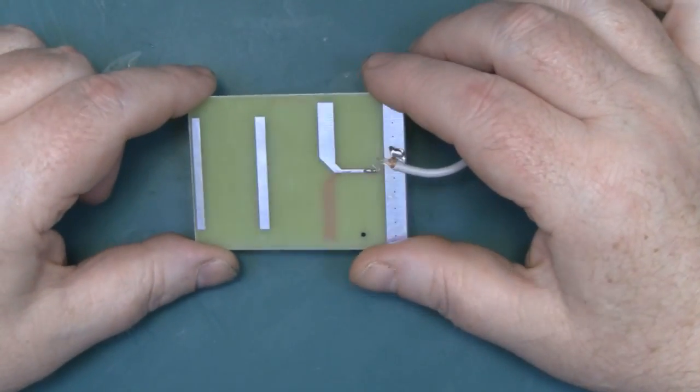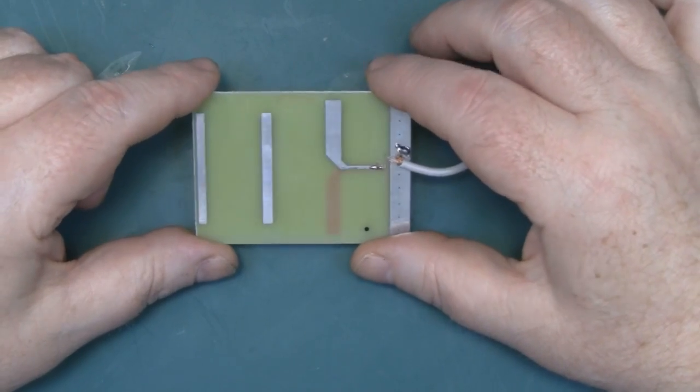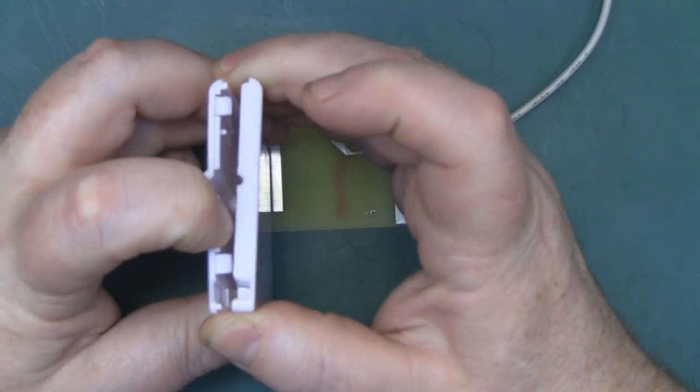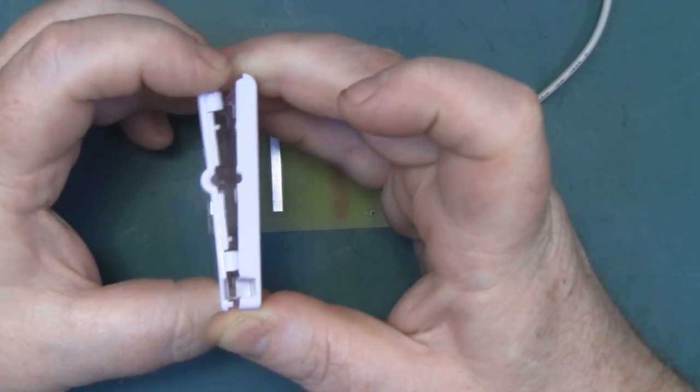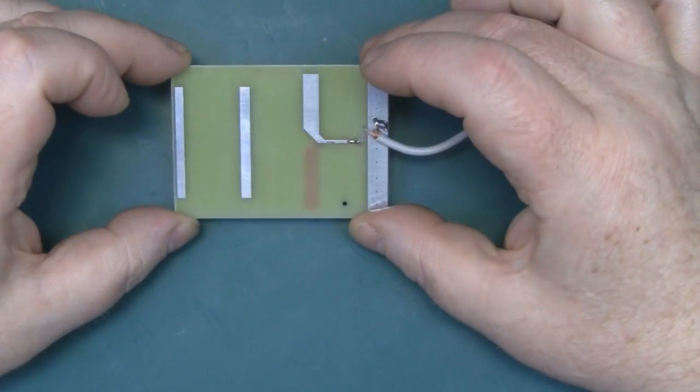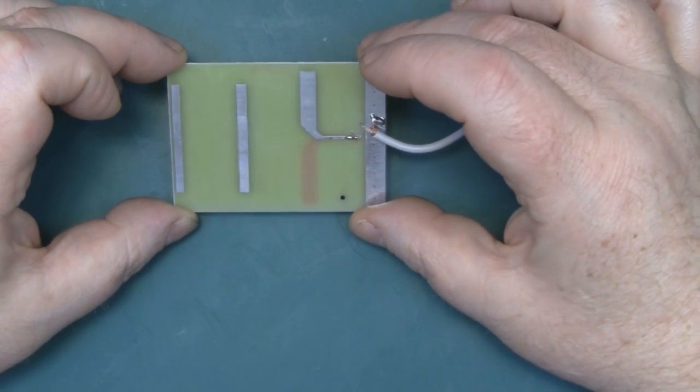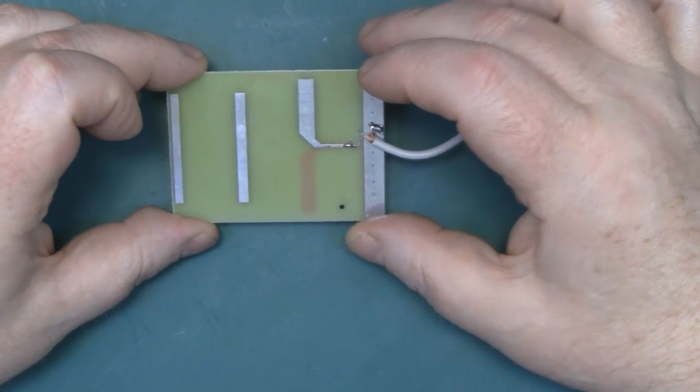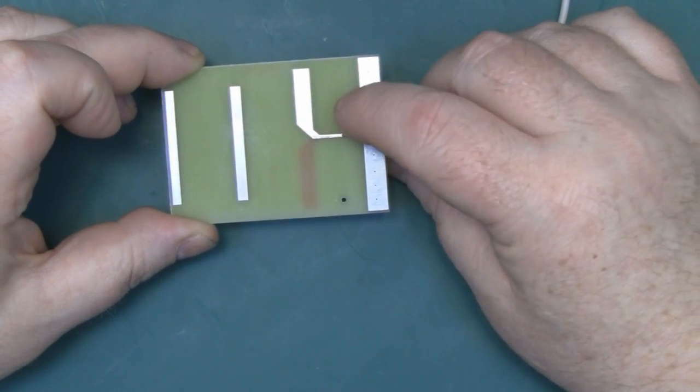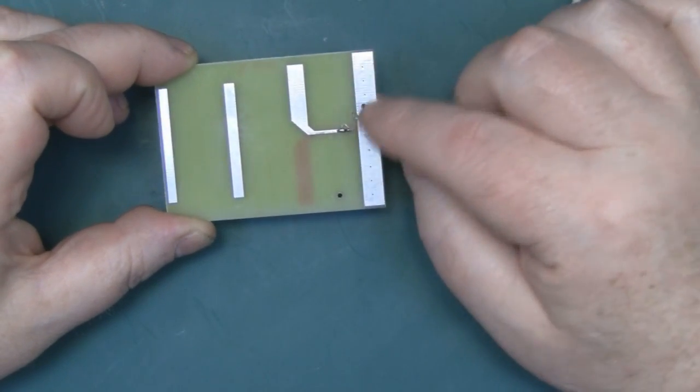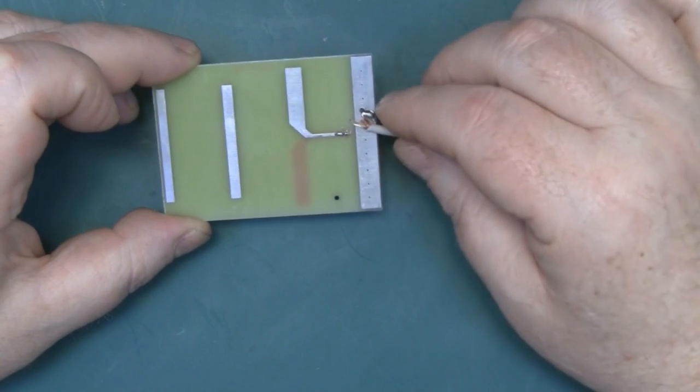So I managed to get the PCB out of the case itself. The case seems to be glued down as well as clips, so I managed to prise this end open and pull the PCB out. Now it is a little PCB Yagi antenna and it's quite a nifty simple little design. I did pull the signal wire off its solder point here actually pulling it out, but we can repair that later.